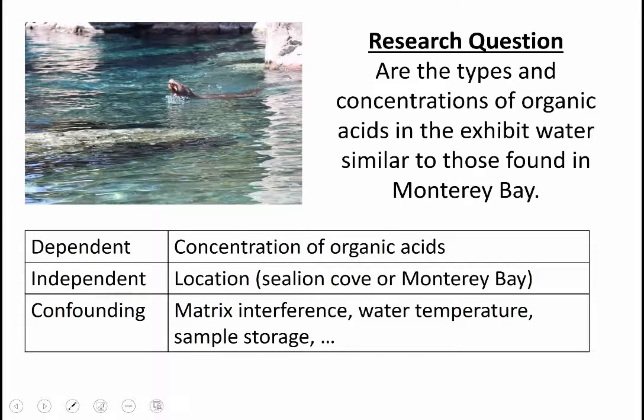In a question type problem, it can be a little more difficult to tell. So in this example, it's not too bad. Are the acids in the water different in the exhibit in Monterey Bay? The dependent would be the concentration of the acids. Typically, you would test for a set of acids, measure all their concentrations, and look at which ones are present or not.